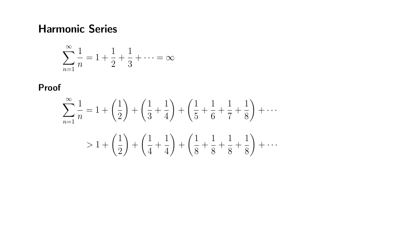So we're going to actually have a whole bunch of 1 halves. In fact, you can actually create infinitely many 1 halves in its sum. So the sum is going to be definitely divergent, because we have infinitely many 1 halves.